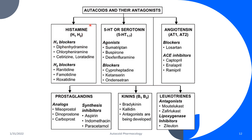For histamine, examples of histamine antagonists include the antihistamines — the H1 blockers and the H2 blockers. For serotonin (5-HT, 5-hydroxytryptamine), this includes serotonin antagonists and serotonin blockers. For angiotensin, we have angiotensin blockers and angiotensin converting enzyme (ACE) inhibitors. For the prostaglandins, we have inhibitors of prostaglandin synthesis, which include NSAIDs or non-steroidal anti-inflammatory drugs. For the leukotrienes, we have leukotriene antagonists and lipoxygenase inhibitors.